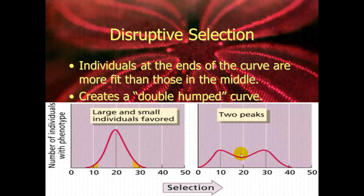Disruptive selection means that you've got two favored populations. Within the population, two opposite phenotypes are important, leading to two peaks. Eventually this could lead to speciation — two species forming from one, because one side is so small and the other side is so large that they're unable to mate anymore.